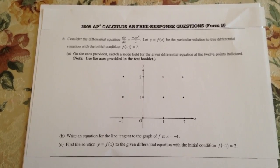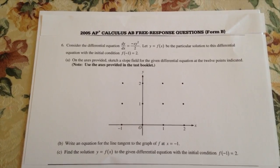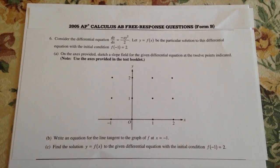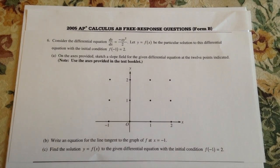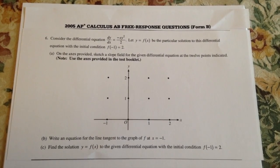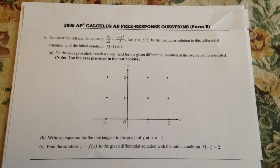So on this question it asks, consider the differential equation dy over dx equals negative xy squared over 2. Let y equals f of x be the particular solution to this differential equation with the initial condition.